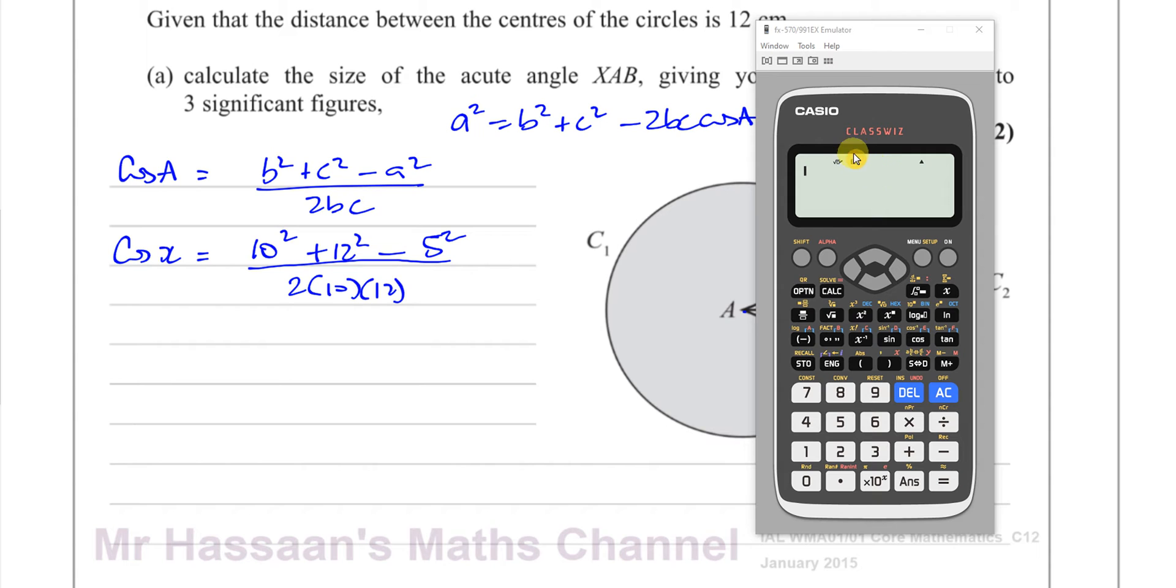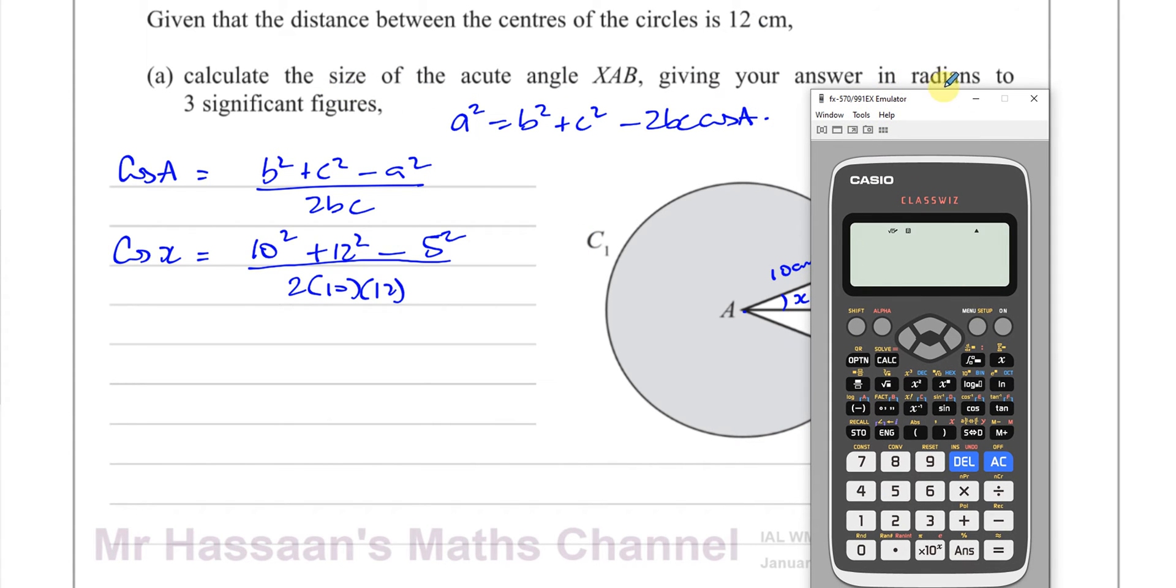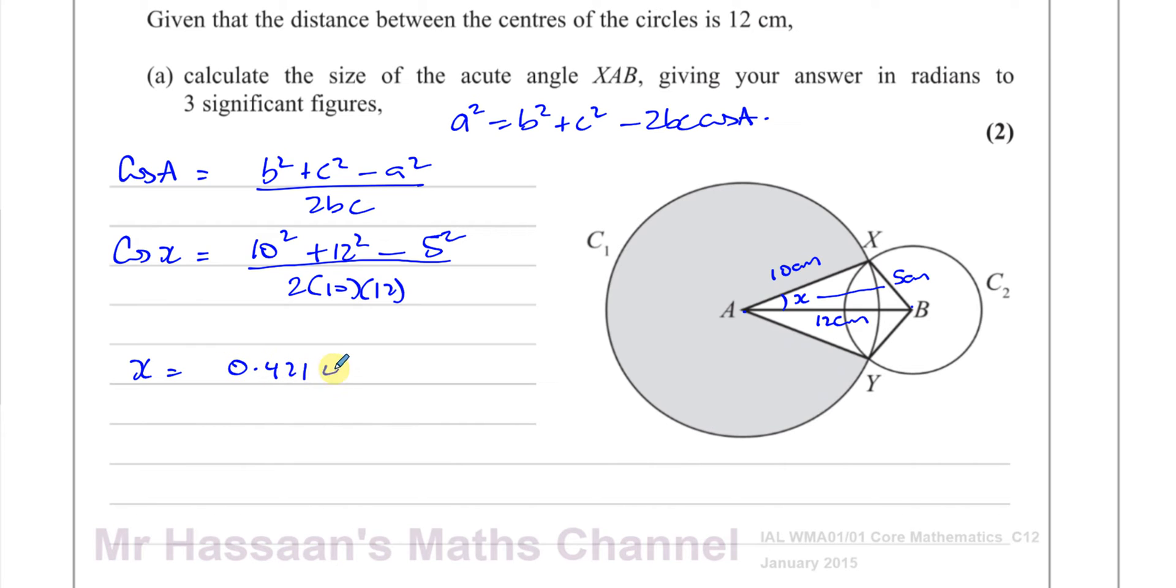The calculator must be in radian mode. If it wasn't, you'd press shift and then menu, then angle unit, then press 2 for radians. Because they said calculate the angle giving your answer in radians to 3 significant figures. I'm going to write X equals the inverse cosine of all of this. Press shift and cosine, put this in a fraction bar: 10² + 12² - 5² over 2 × 10 × 12. You're going to get 0.42144 radians.